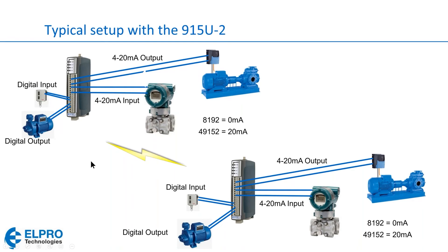This is a typical setup you'll find with the 915U2, and this is what we are going to replicate today in the programming section. We have a 4-to-20 milliamp output going to a pump or machine, a 4-to-20 milliamp input from a pressure transmitter, a digital input from a pressure switch, level switch, or temperature switch, and a digital output going to a pump or on-off device. The same setup is on the opposite end.